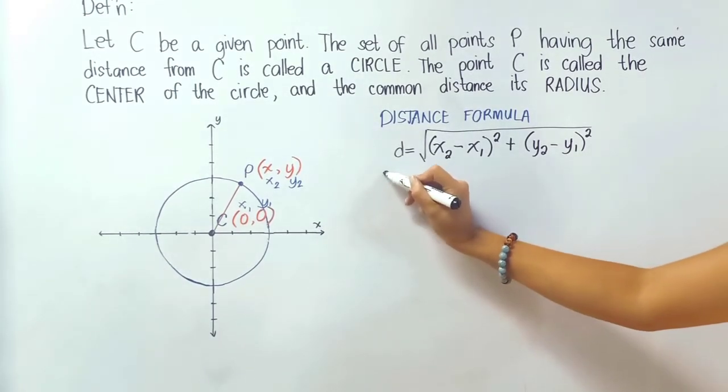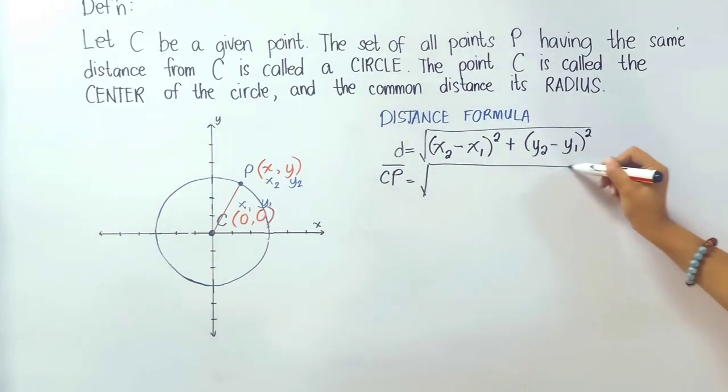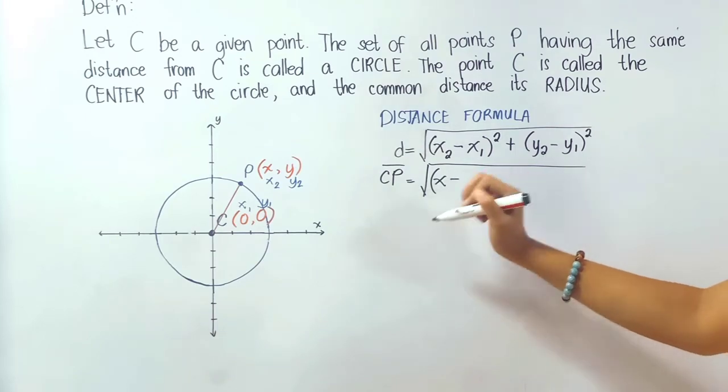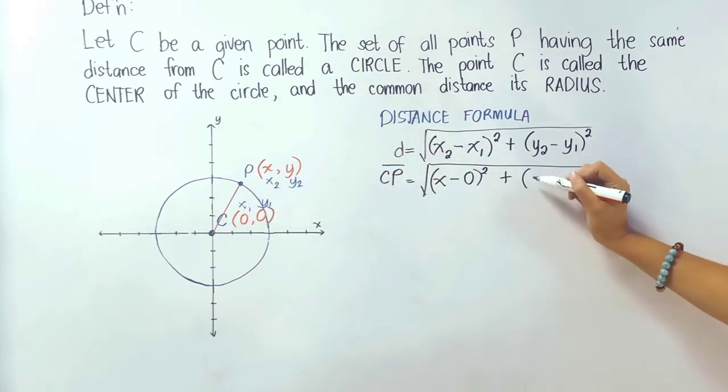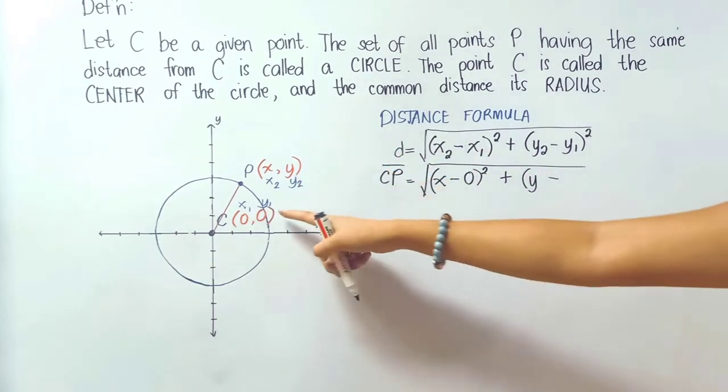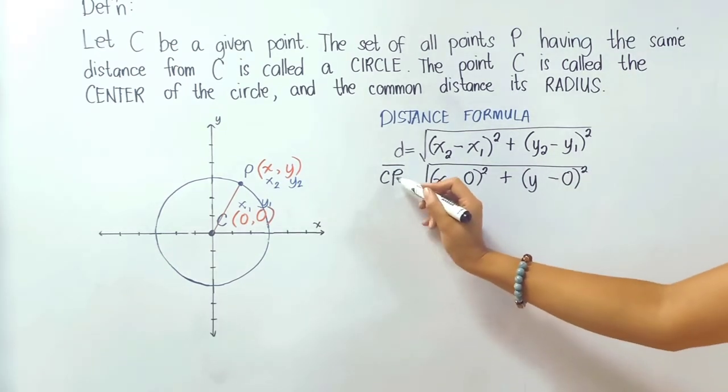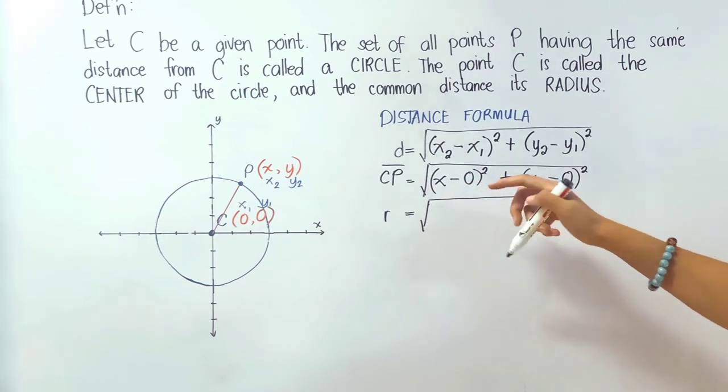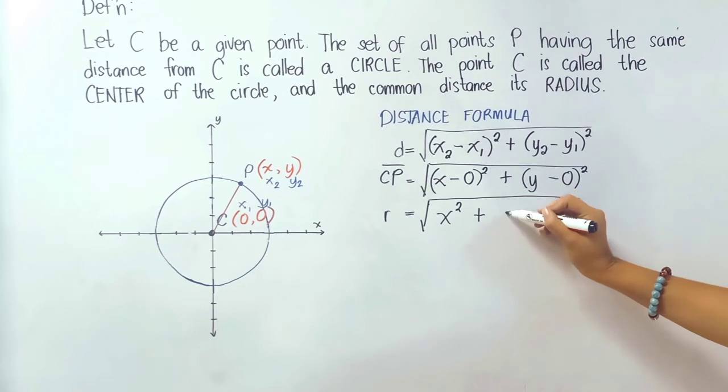So to get the distance of line segment CP, we'll simply substitute the values here. So it's the square root of x sub 2 is x minus x sub 1 is 0 quantity squared plus y sub 2 is y minus y sub 1 is 0 quantity raised to 2. So now remember that line segment CP is our radius so I will continue this portion here so it will be x squared plus y squared.